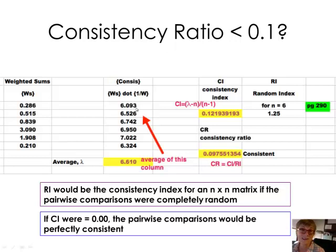And I'm taking that consistency vector, which is the dot product of W S and one over W, and taking the average of that. Look at 6.610. That's lambda. That's our eigenvalue.